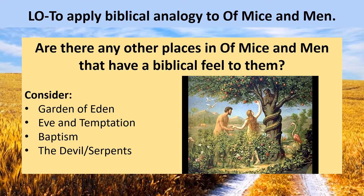Are there any other places in Of Mice and Men that you think have a slightly biblical feel? The idea of the Garden of Eden — that paradise — I can definitely think of somewhere in the novel that is reminiscent of a paradise where nature seems completely at peace. What about the idea of Eve and temptation, the temptress, the woman who tempts you to do bad things? And even that phrase 'I done a bad thing' — does Lenny not in fact say that? The idea of baptism — that water will help you to be reborn, or that your sins can be washed away — is that appearing anywhere in the novel? And what about the idea of the devil or serpents? Who do you think the devil would be in this story? And is there imagery of serpents, or perhaps water snakes, anywhere in the novel?